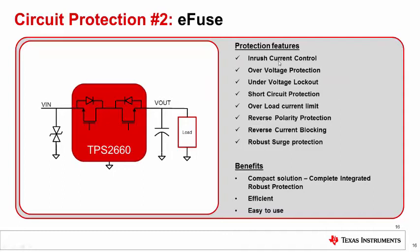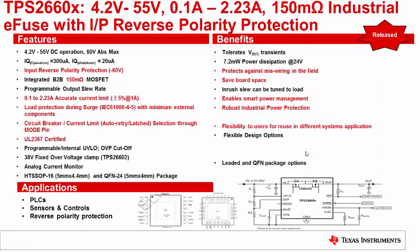An integrated surge protection solution using an e-fuse provides all the protection features required along with robust surge protection in an efficient, easy-to-use, and compact form factor. The TPS2660 e-fuse operates from a supply bus voltage of 4.2 V to 55 V DC with an absolute maximum of 60 V. It features integrated 60 V back-to-back switches requiring no additional component for reverse polarity protection. The inrush current is programmable via the dV/dt pin, current limit accuracy is ±5% at 1 A, and current limit is programmable via the ILIMIT pin. Undervoltage and overvoltage thresholds are programmable via an external resistor ladder, the overload fault response is selectable via the MODE pin, and the IMON pin provides load current monitoring.